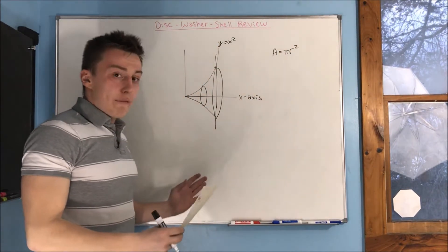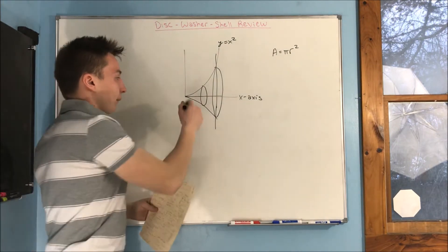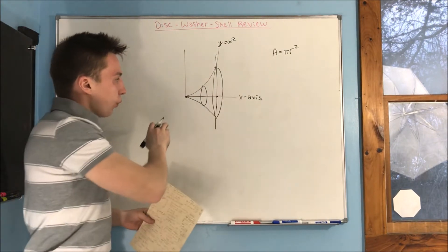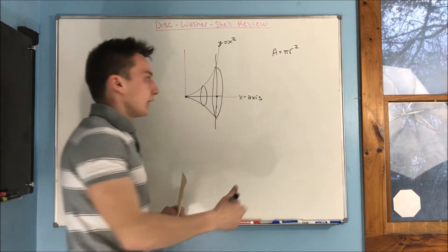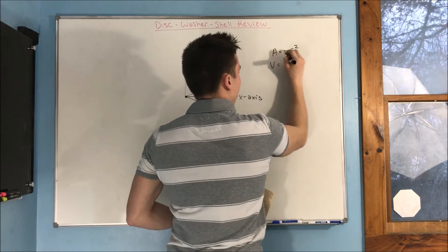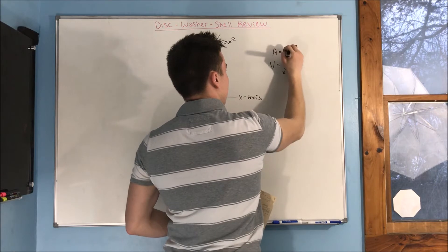So if we integrate this from here to here, we get a volume, because we're adding up all those cross-sections together, giving a volume. So that's going to be the integral of your pi r squared from a to b.